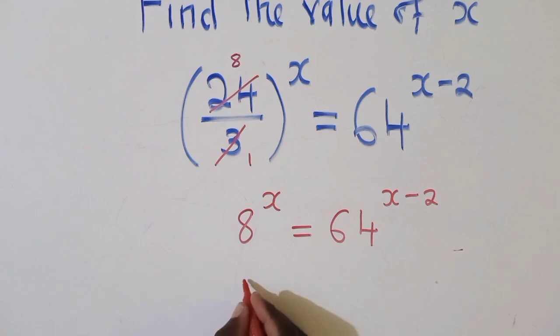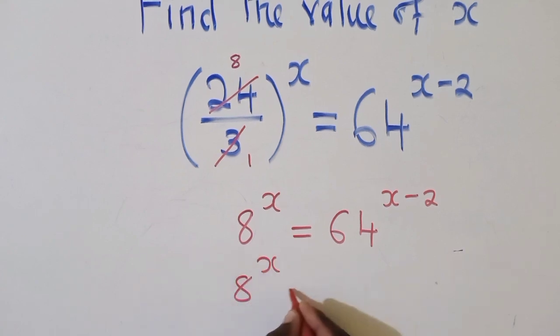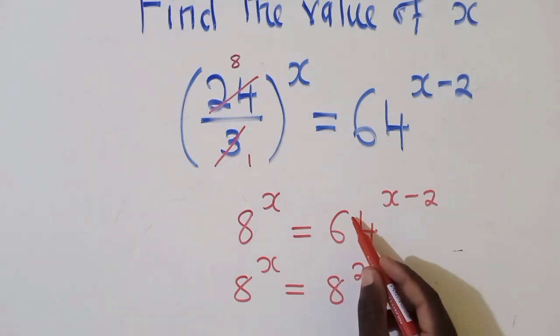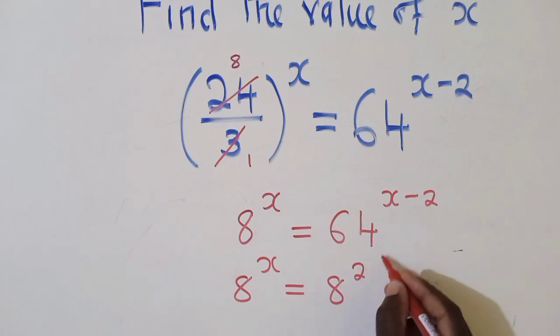We can just say 8 power x is equal to, this side also, 8 power 2. This simply because we know that when we say 8 power 2, we shall definitely get 64 and that's what we want.